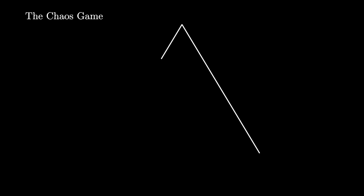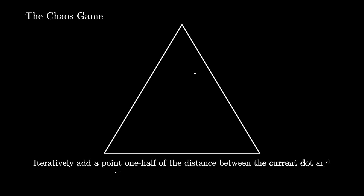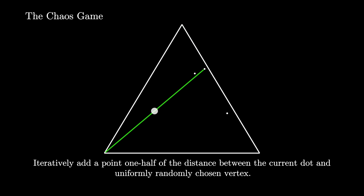The second technique uses the so-called chaos game. We again begin with an equilateral triangle, and this time we start with a dot somewhere in the middle. We randomly choose one of the three vertices, then we draw a line between the dot and that vertex, and plot the midpoint. Now repeat the process, each time starting at the dot we have, drawing to a random vertex, and plotting the midpoint.